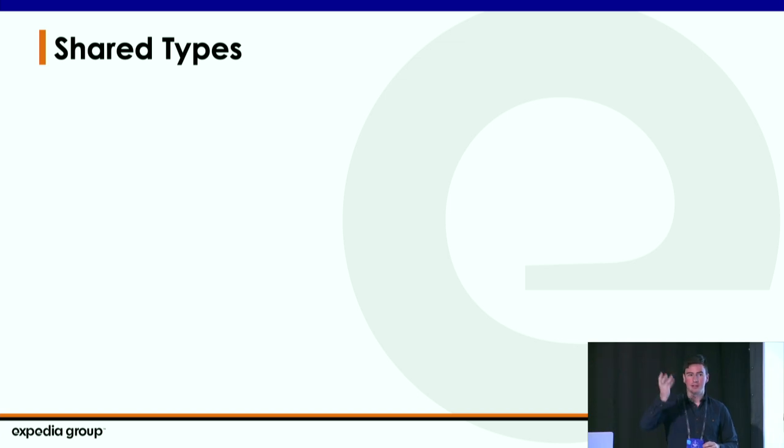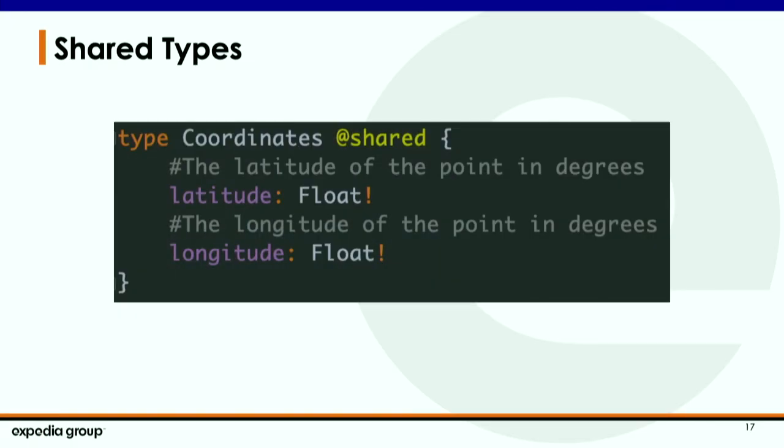Since we're doing schema stitching with all these different services, one issue we had was with conflicting types when merging schemas. If the hotels team defines a generic type like 'coordinate,' and then the flights team also wants a type called 'coordinate' for GPS coordinates, that creates a conflict during stitching. So we wanted to standardize types used across all our services. We created a simple directive called @shared, which allows us during stitching to recognize that a type is coming from the SDK — it's valid, it won't cause a type conflict, and it will look exactly the same across all services.